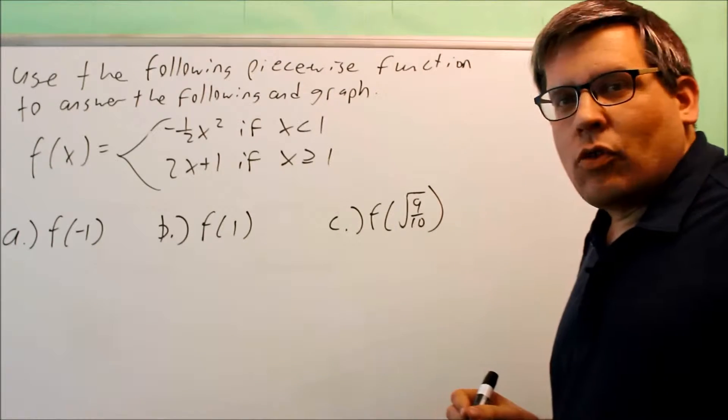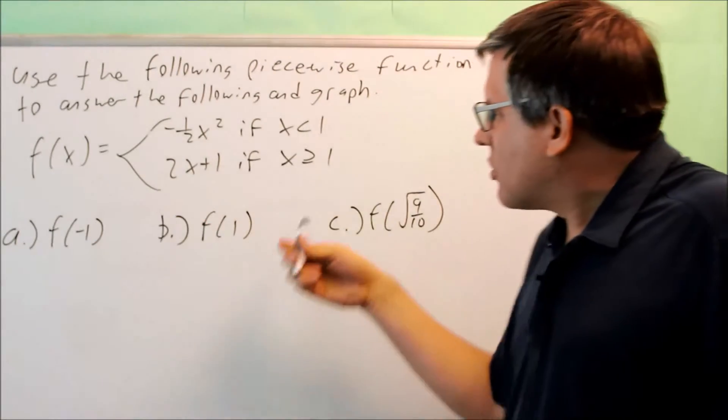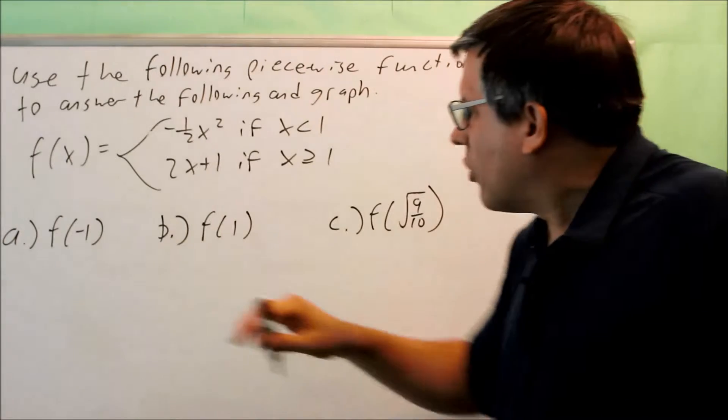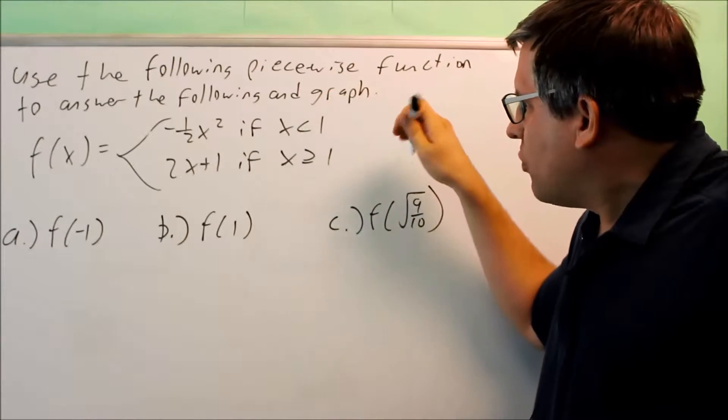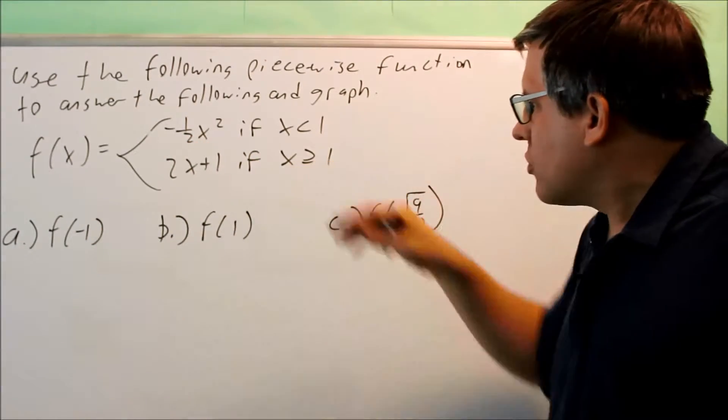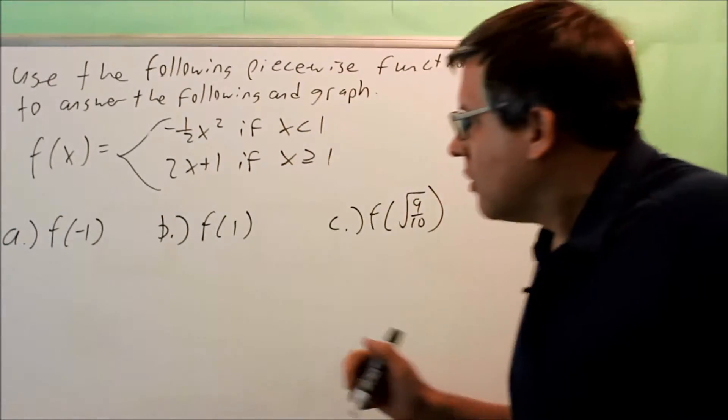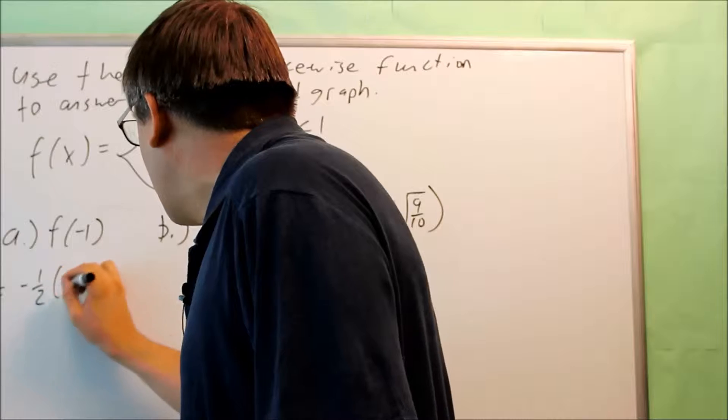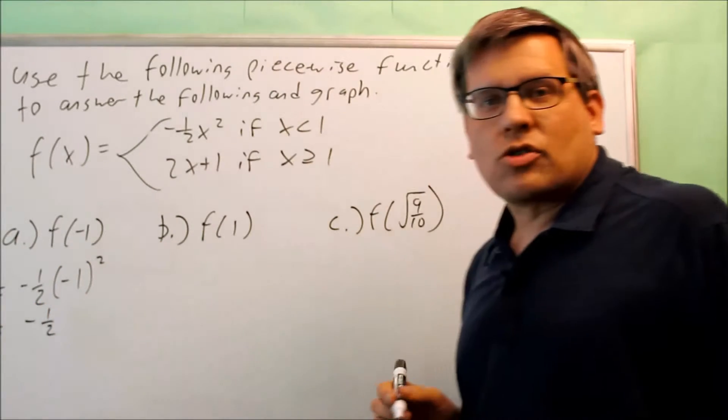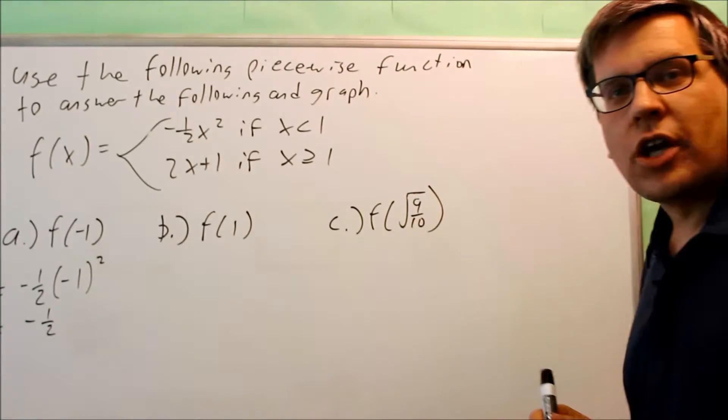The first one, f of negative 1. For this one, we look at the number inside the parenthesis and we see which one of these equations it's going to belong to. Negative 1 is less than 1, which means we're going to use only the first equation. I have negative 1 half, put negative 1 in for x. Negative 1 squared is 1, so negative 1 half times 1 will give you negative 1 half.